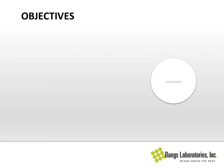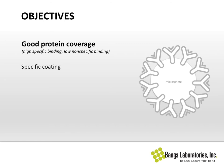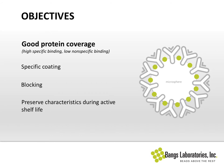Firstly, thinking of our objectives with bead coding and taking a typical protein coating on a particle. Our aims are generally going to be good protein coverage, which we take to mean high specific binding and low nonspecific binding. To achieve that, we coat particles with a specific ligand of some sort, an antibody in this instance. We also utilize a blocker to block bare patches on the surface of the microparticle and deter nonspecific binding, so beads won't stick to each other and we don't have unintended things from samples sticking to particles. We'll also be talking about how to preserve characteristics of this coated particle during its active shelf life.